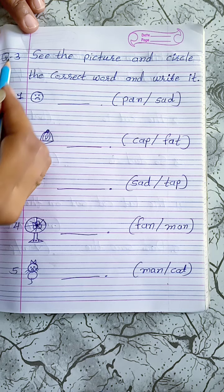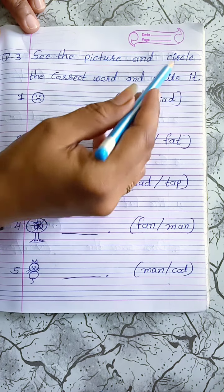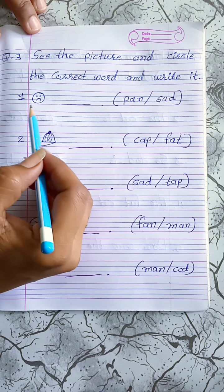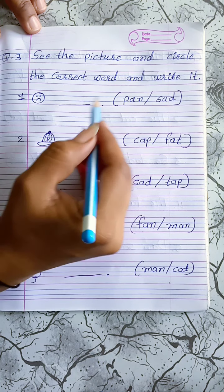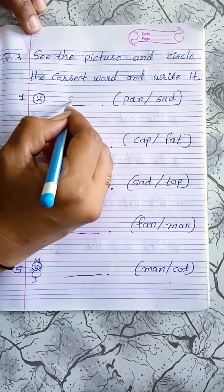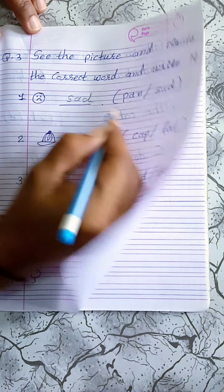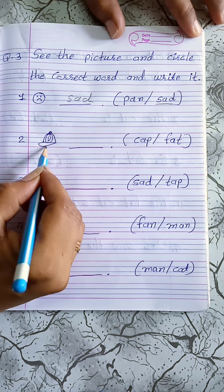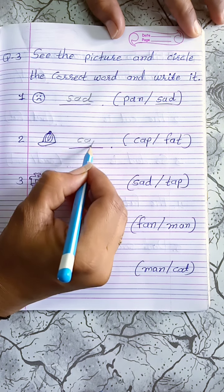Question 3: See the picture and circle the correct word and write it. First is sad. Write the spelling of sad: S-A-D, sad. Second picture, cap: C-A-P, cap.